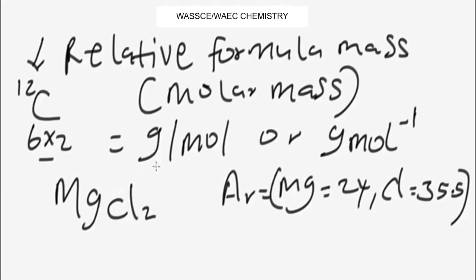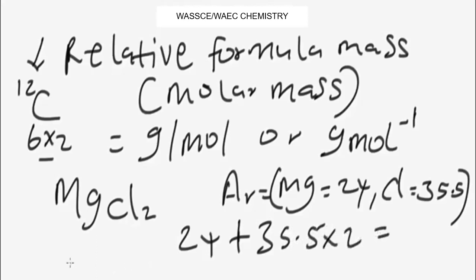To find the relative formula mass or molar mass of a compound, add up all the relative atomic masses of the atoms in the compound. For magnesium chloride: magnesium has a relative atomic mass of 24 and there is one atom of magnesium, plus chlorine is 35.5 and there are two atoms of chlorine. So it's 24 + 35.5 × 2 = 95 grams per mole.